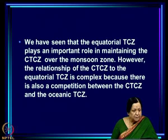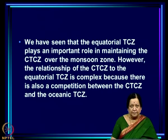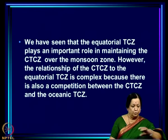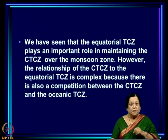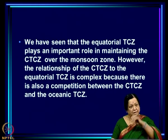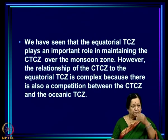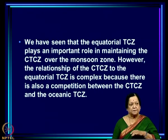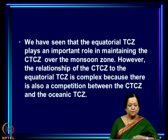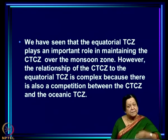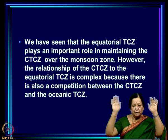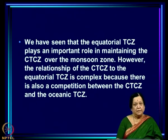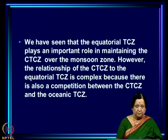In a TCZ, air is ascending over a zonal belt spanning some latitudinal range. North and south of the TCZ, the air pumped up actually descends. This means that if there are two such TCZs at two latitudes over the same longitudinal belt, each will try to suppress the other through its descending limb — leading to competition between the two TCZs.